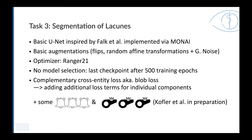We use a basic UNET architecture, inspired by Falk and colleagues. The implementation happens via Moni. Our data is augmented with basic procedures, meaning flips, random affine transformations and Gaussian noise. Ranger21 serves as our training optimizer.